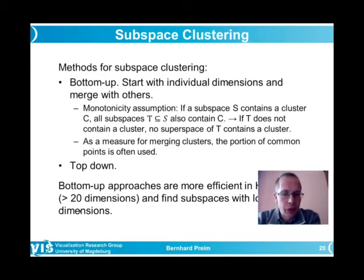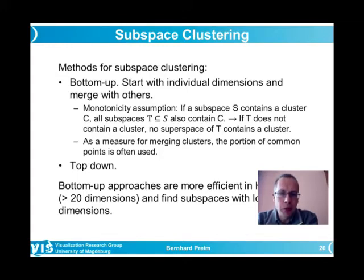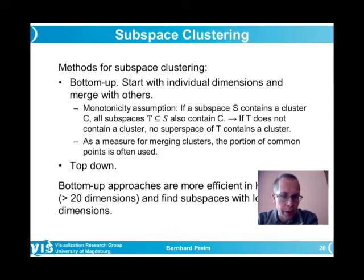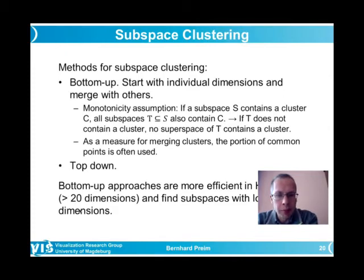Methods for actual subspace clustering: most are bottom-up, starting with individual dimensions and merging with others. The monotonicity assumption is key: if a subspace S contains cluster C, then all subspaces with fewer dimensions also contain this cluster. Conversely, if subspace T contains no cluster, no superspace of T will either. This is critical for pruning the search space.